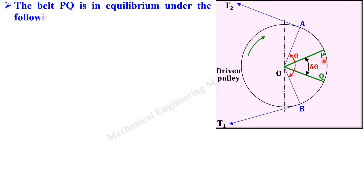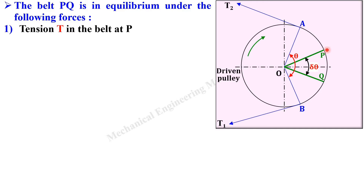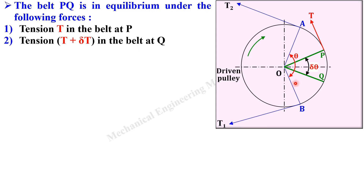The belt PQ is in equilibrium condition under the following forces. First, tension T in the belt at P. Next, tension T plus delta T in the belt at Q, because on this side there is the tight side tension, so the tension will always be more — that is why it is T plus delta T. Delta T is again a very small increment of T.